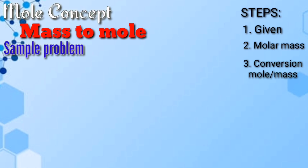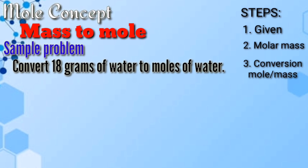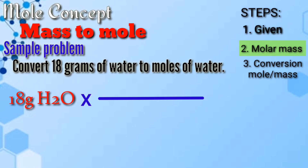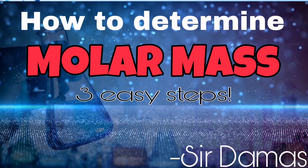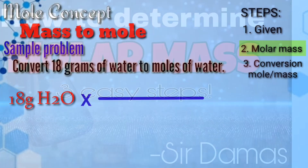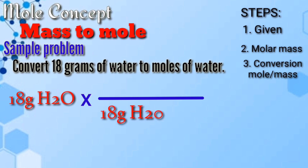Let's have an example. Convert 18 grams of water to moles of water. First step: write the given. Our given is 18 grams of water. Then get the molar mass. The molar mass of water is 18 grams per mole.